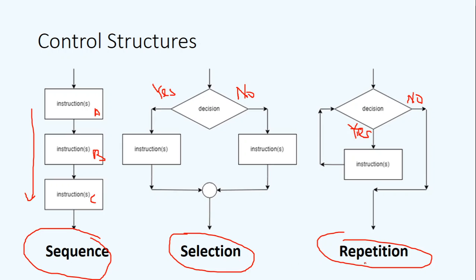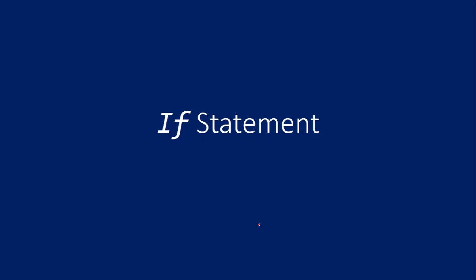The termination will go to the 'no' branch of the decision, and therefore that ends the flowchart. So we have sequence, selection, and repetition. In today's lecture we are going to cover the selection control structure and see how we can implement it in Python, and what language constructs we can use. Let's move on to the next slide, which is about the if statement.